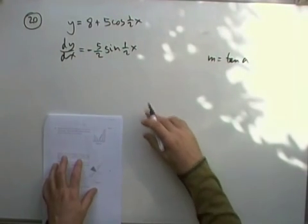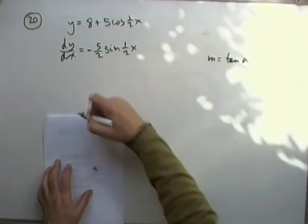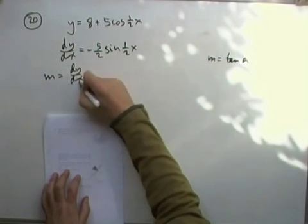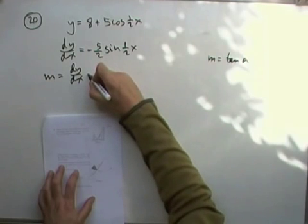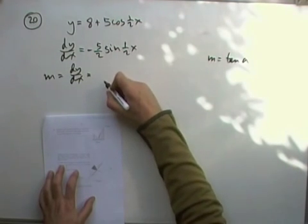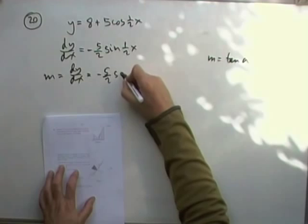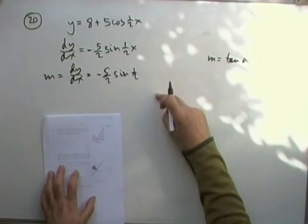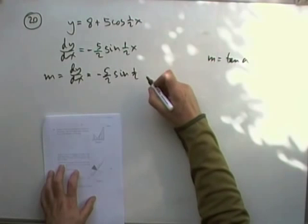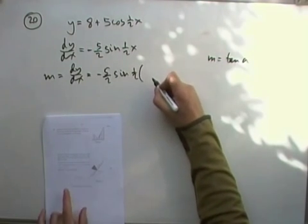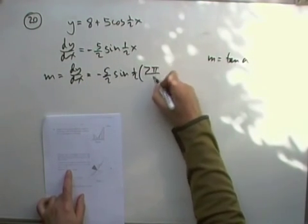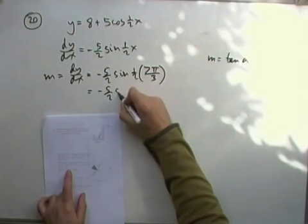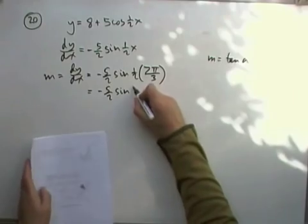And of course, the derivative of that is the same as the gradient. So I'll say the gradient will equal the derivative at all points in the curve. And in this particular case, will equal negative 5 upon 2 sine a half of whatever that x-coordinate is. And that x-coordinate is 7pi upon 6. So I'll write that as 7pi upon 3. So that gives me negative 5 upon 2 inverse sine 7pi upon 6.